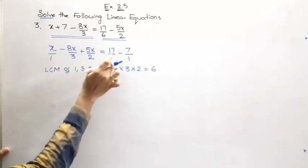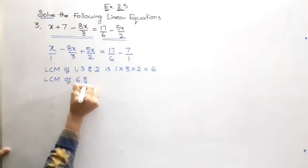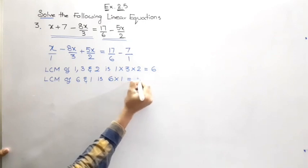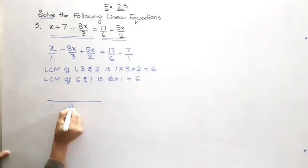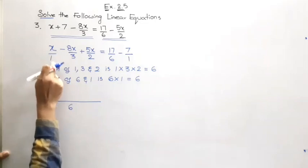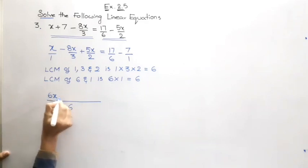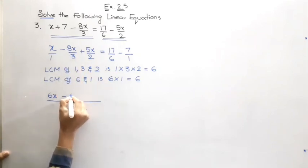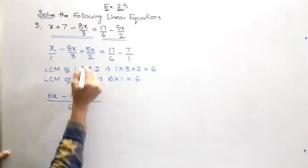LCM of 1, 3 and 2. So all are prime numbers. So the LCM is going to be their product 1 into 3 into 2 which is equal to 6. On the RHS also, LCM of 6 and 1—as you know when we have 1 as one of the factors the LCM is going to be the same, 6 into 1 which is equal to 6. So let us go for the first one. So the common denominator is going to be 6. Now 1 how many times is 6? 6 times. So 6 into numerator x, 6x. Minus 3 how many times is 6? 2 times. 2 into 8x, 16x. Plus 2 how many times is 6? 3 times, 3 into 5 is 15x.